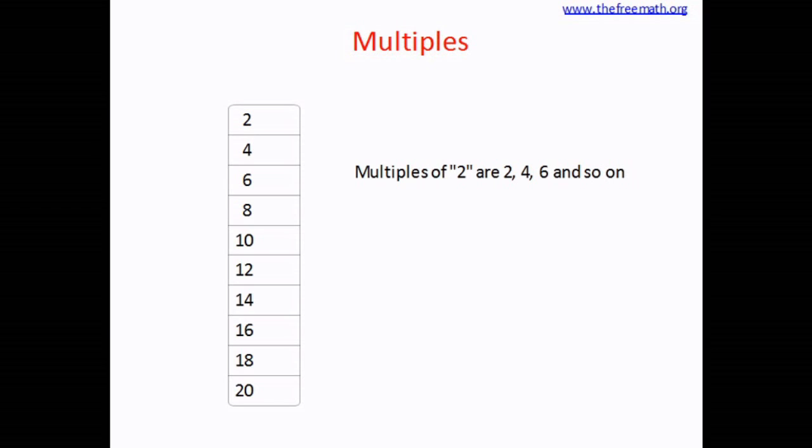How do you get a multiple? If you want to get a multiple of 2, you multiply 2 by any other number and then you get a multiple of 2.